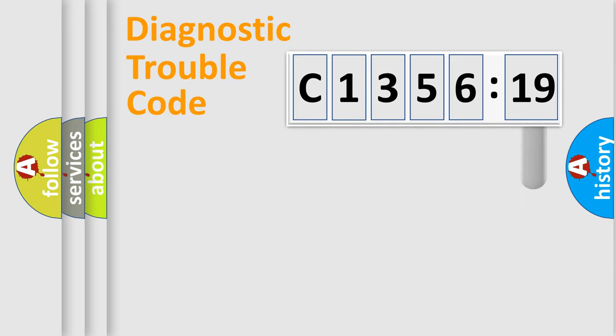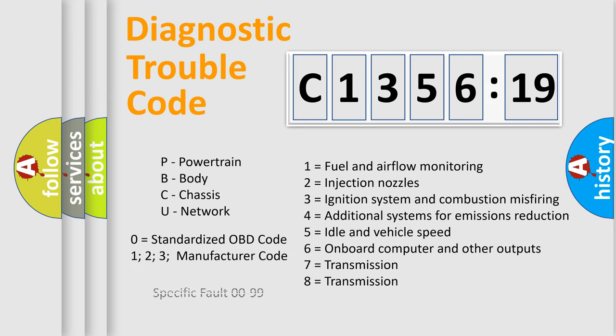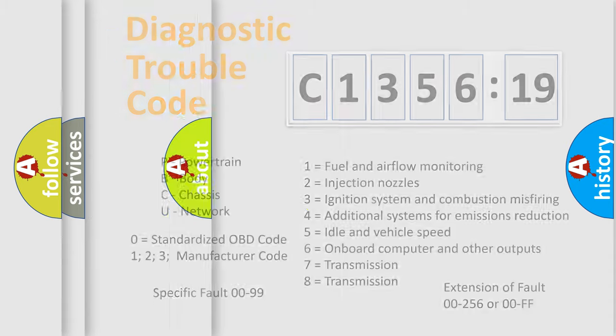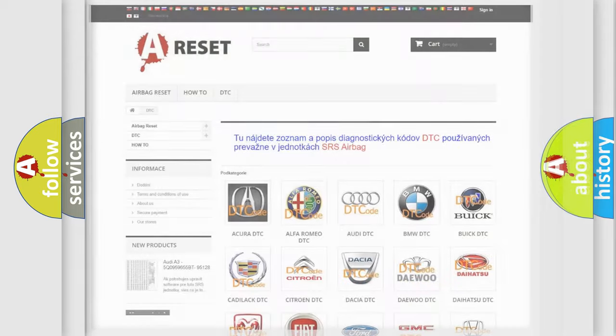Only the last two characters define the specific fault of the group. The add-on to the error code serves to specify the status in more detail. For example, a short to the ground. Let's not forget that such a division is valid only if the other character code is expressed by the number zero.